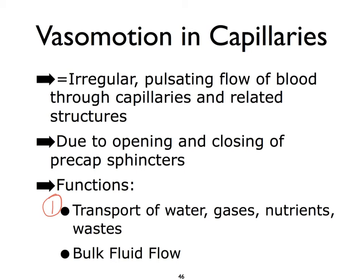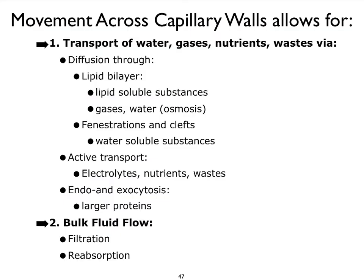So the two functions of our capillary beds are: the exchange of nutrients and wastes, oxygen and carbon dioxide — and then something called bulk fluid flow. Bulk fluid flow is what ultimately leads to the production of another fluid in the body called lymph. In the next video, we'll focus on bulk fluid flow in detail, including filtration and reabsorption of blood at different ends of our capillary bed.